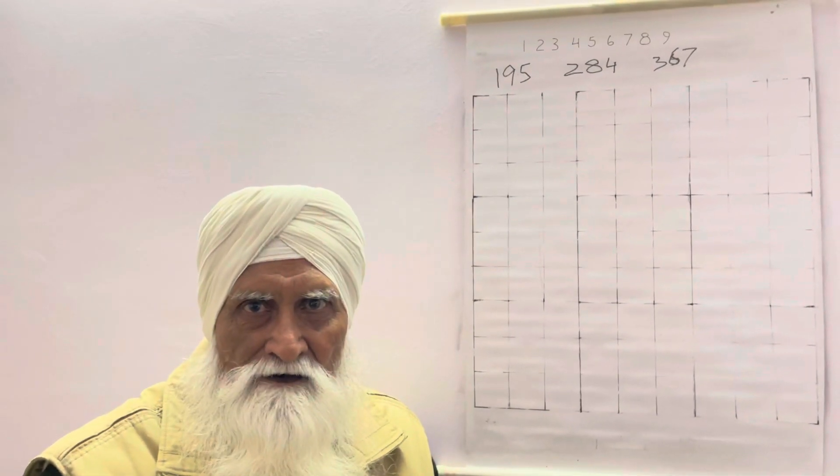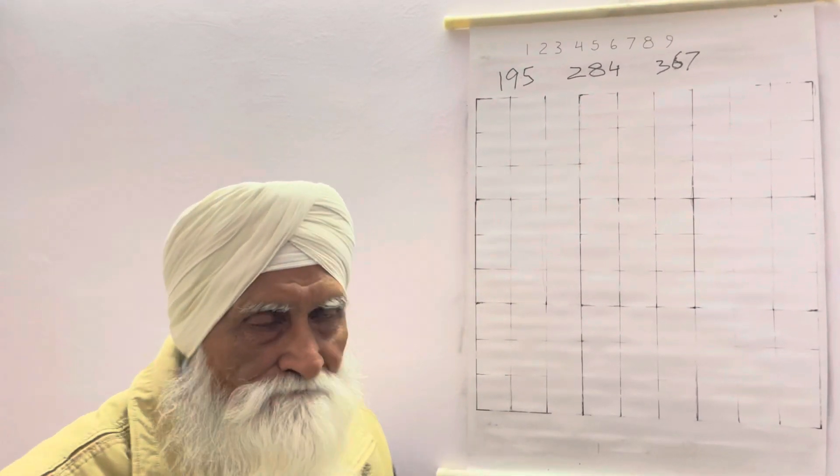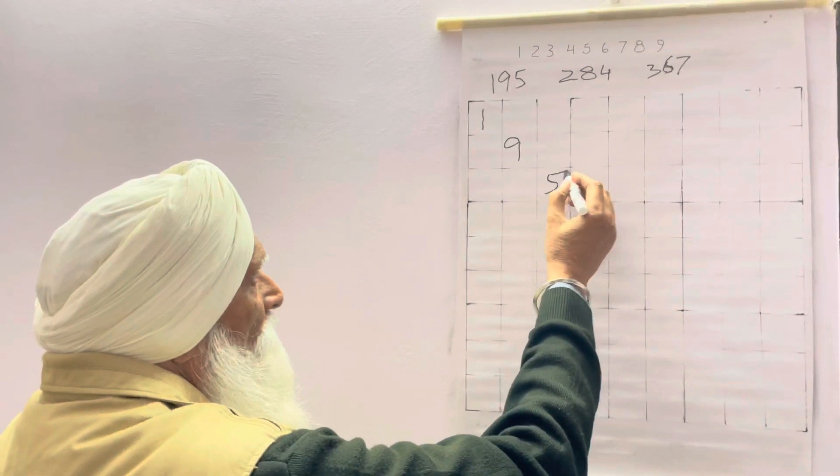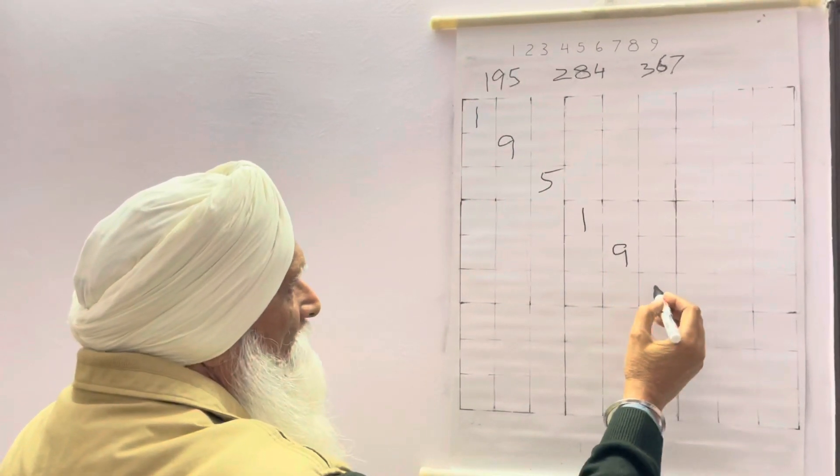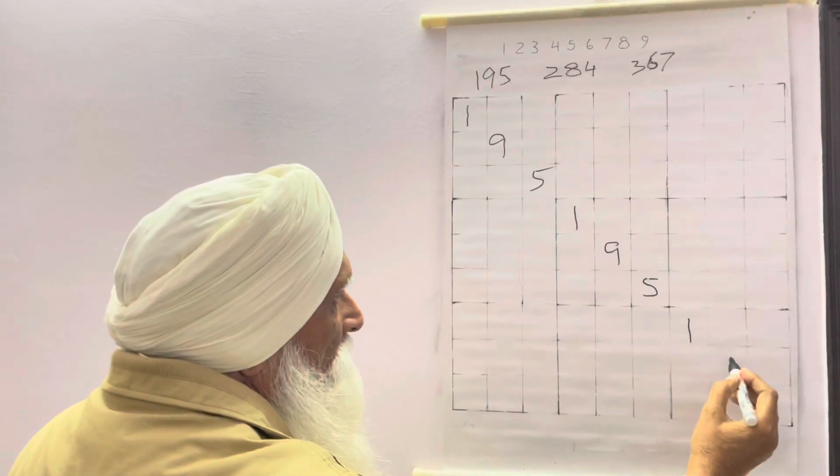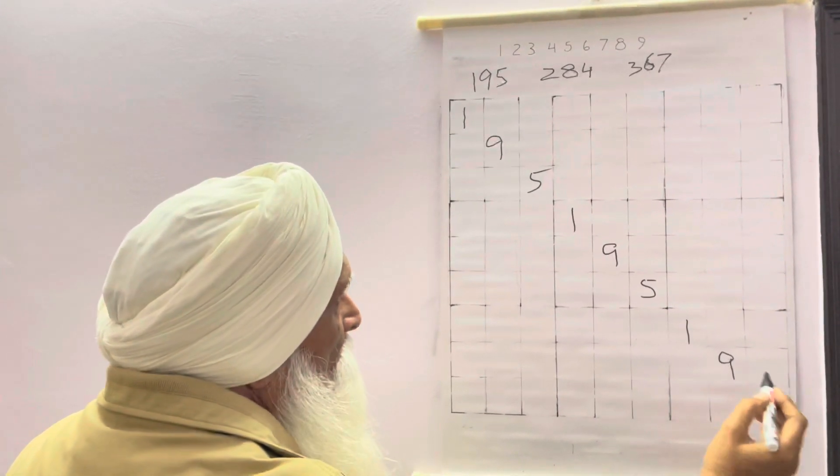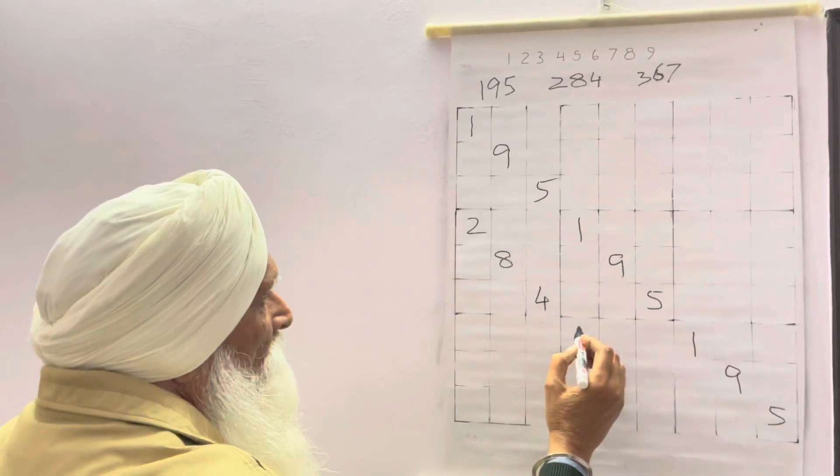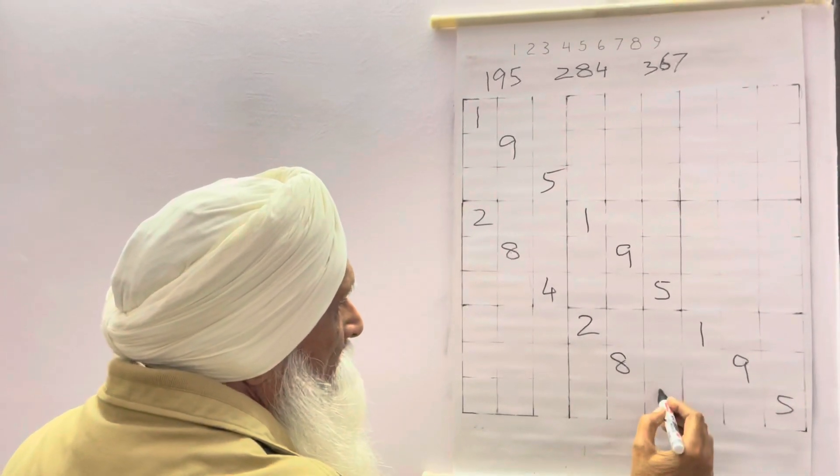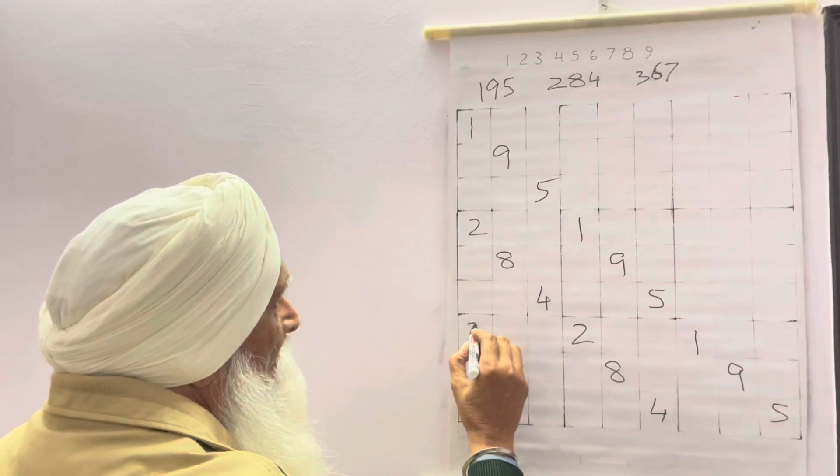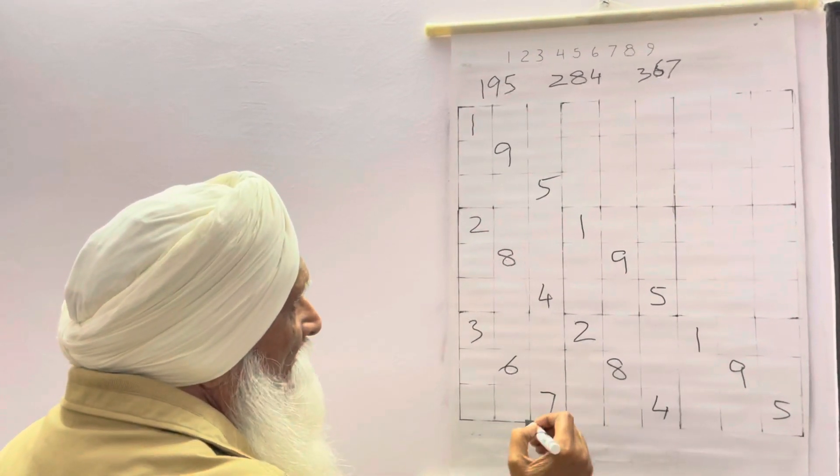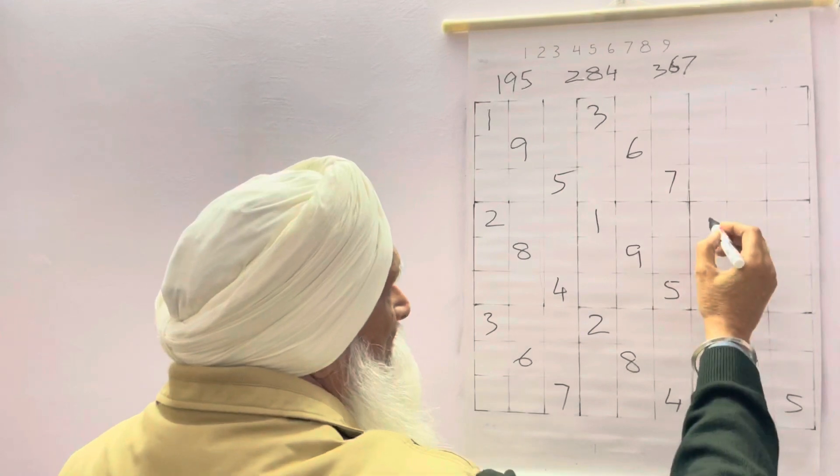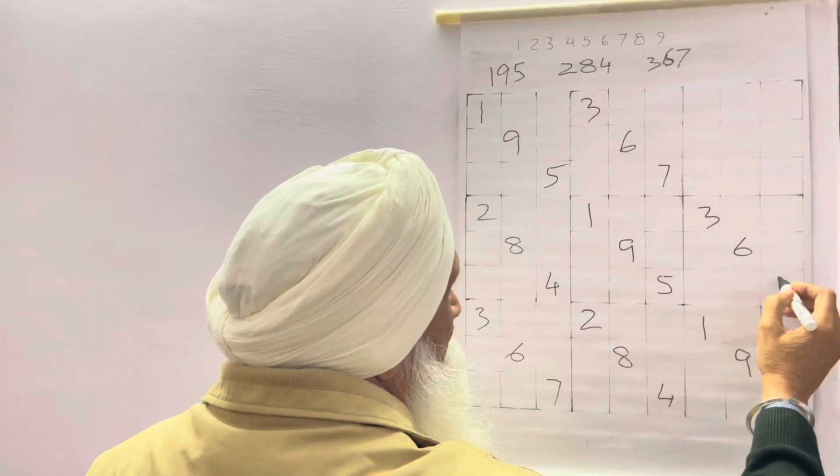So I will explain the second method of writing the grid. 1, 9, 5, 1, 9, 5, 1, 9, 5, 2, 8, 4, 2, 8, 4, 3, 6, 7, 3, 6, 7, 3, 6, 7, 2, 8, 4.